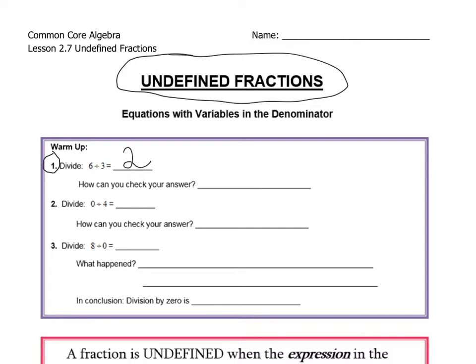Now how can you check your answer? Usually to check an answer, we use what's called inverse operations. If 6 divided by 3 is 2, to check your answer you have to see if 2 times 3 — because multiplication is the opposite of division — is really 6. And we know it is. So 6 divided by 3 equals 2 can be checked and proven to be correct.